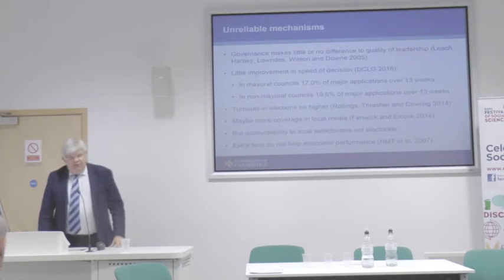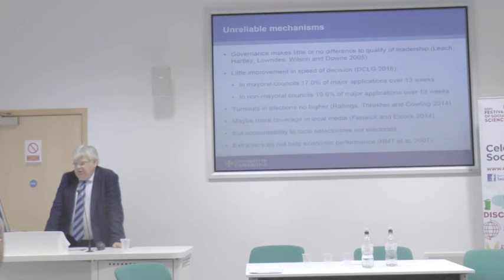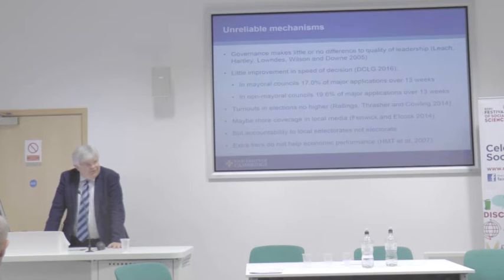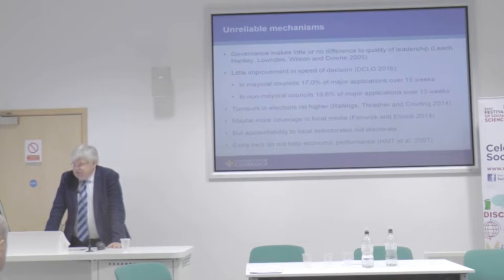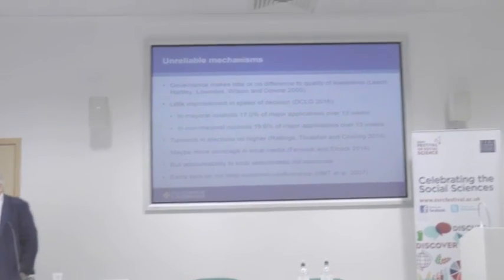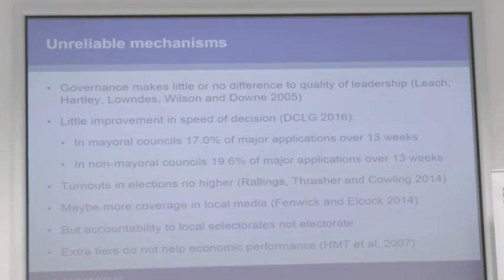Second, speed of delivery. We have one example — Leicester — where the mayor thinks it's faster. If you look at the latest figures on major planning applications published by DCLG in June, and you separate out the mayoral councils from the non-mayoral councils, yes, there is a tiny difference in speed. Mayoral councils: 17% of major applications go over the 13-week time limit. Non-mayoral councils: 19.6% go over. So that's an advantage, but it's not very robust. I doubt it'll be the same every year — it might reverse in some years. It's a small and possibly non-existent advantage. On turnouts in elections, the great gurus of local elections — Rallings, Thrasher, and David Cowling — studied turnouts in local elections in mayoral against non-mayoral councils and found no difference. And in fact, if mayor elections happen out of season — not in the May electoral timing for council elections — then mayoral election turnouts are massively lower.